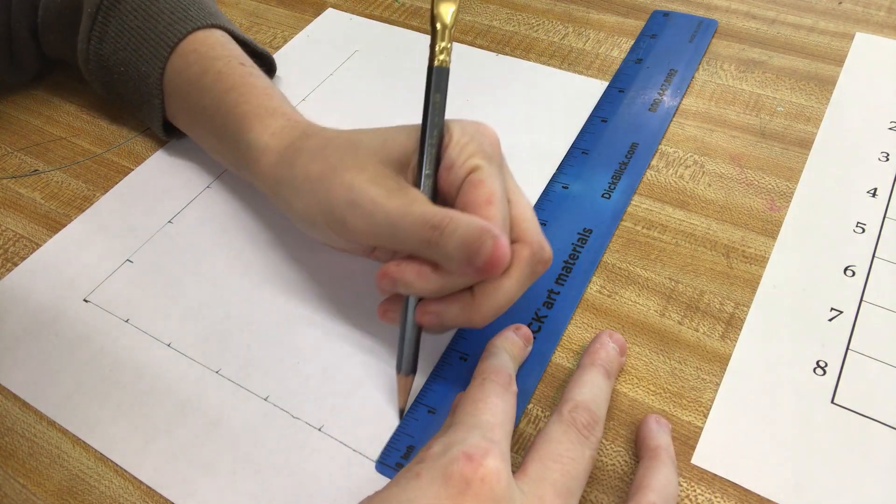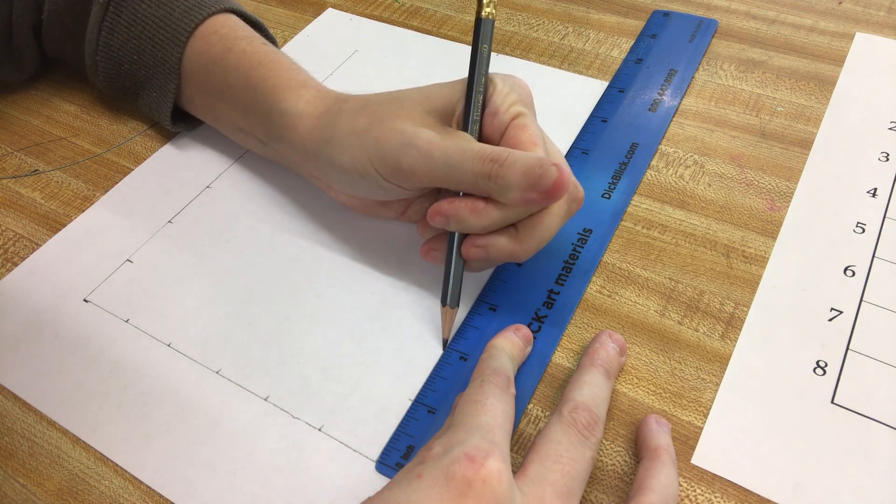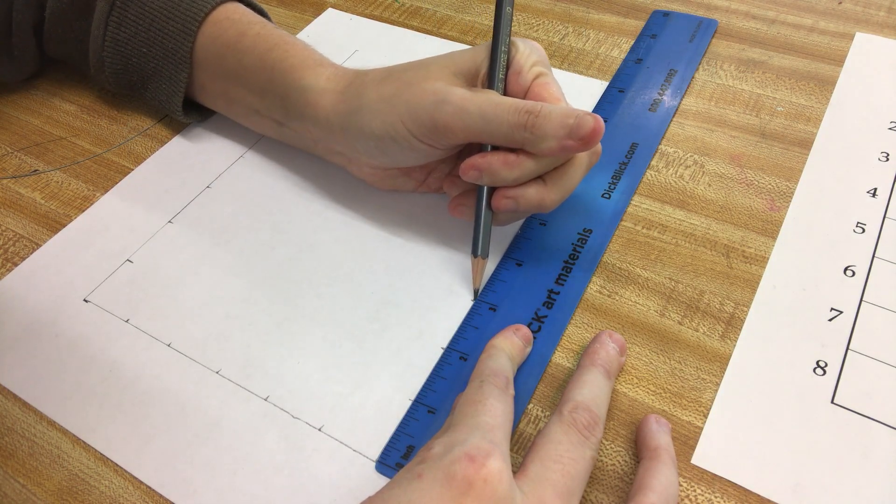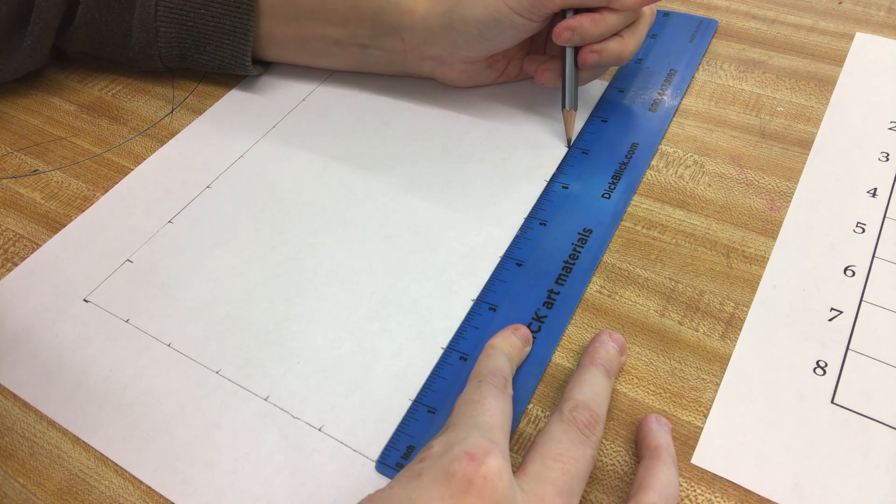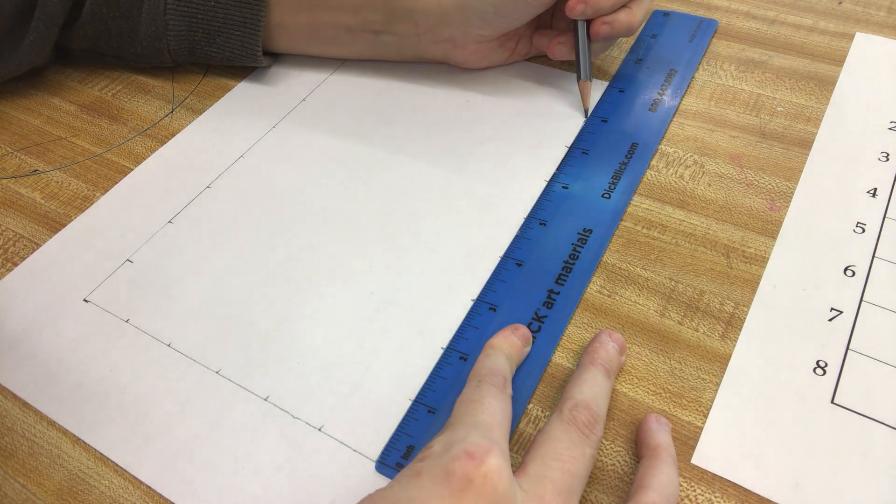And I'm going to go from the zero and make a dot at the 1, the 2, 3, 4, 5, 6, 7, and 8.